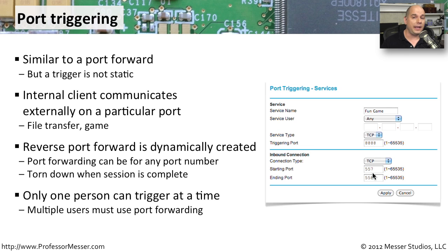One disadvantage of port triggering is that only one person can use a given trigger at a time — once that window is open, everyone returns to a single address, and a second person wanting the same opening cannot use it. In those cases you may have to use a port forward. But if you want a more secure method of allowing access inside your network, you'll probably want to consider using a port trigger.